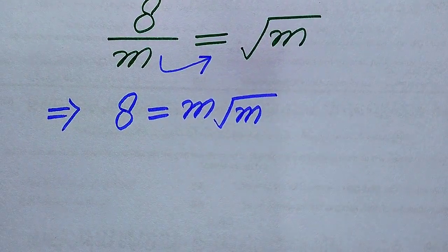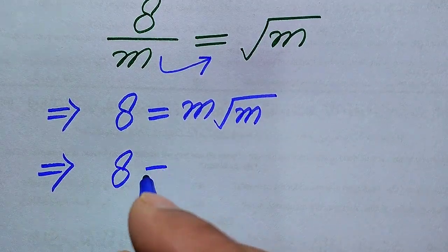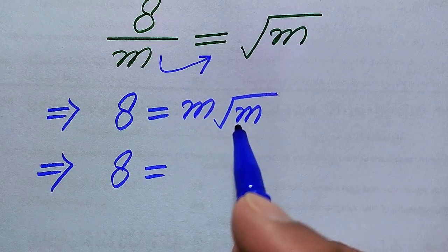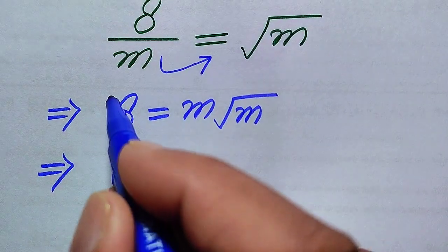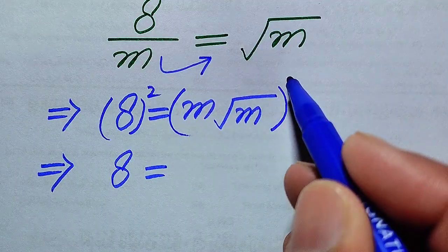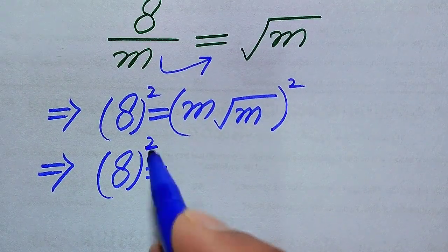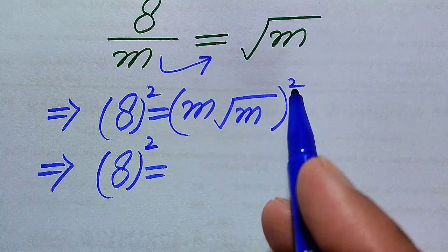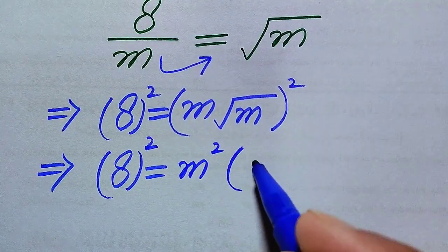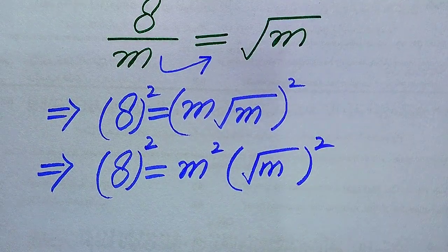In the next step we need more simplifications: 8 equals m times square root of m. We need to remove the square root sign, so we apply squaring on both sides. When we square both sides, the left side becomes 8 squared and the right side becomes m squared times the square root of m, all squared.